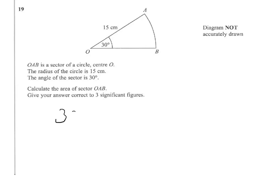To find the fraction, we take the angle at the center and divide it by 360, which is the angle that forms a full circle.